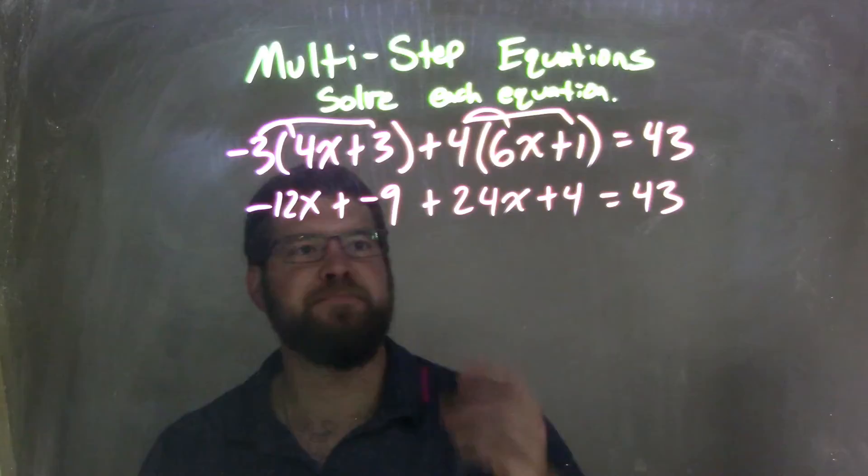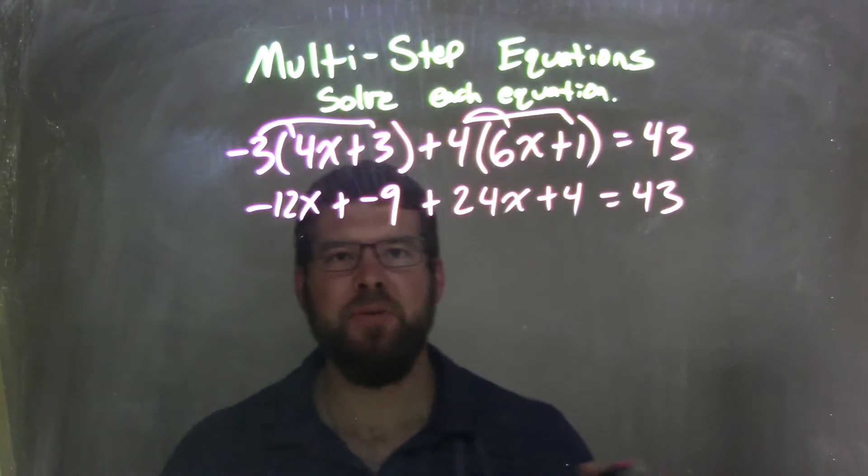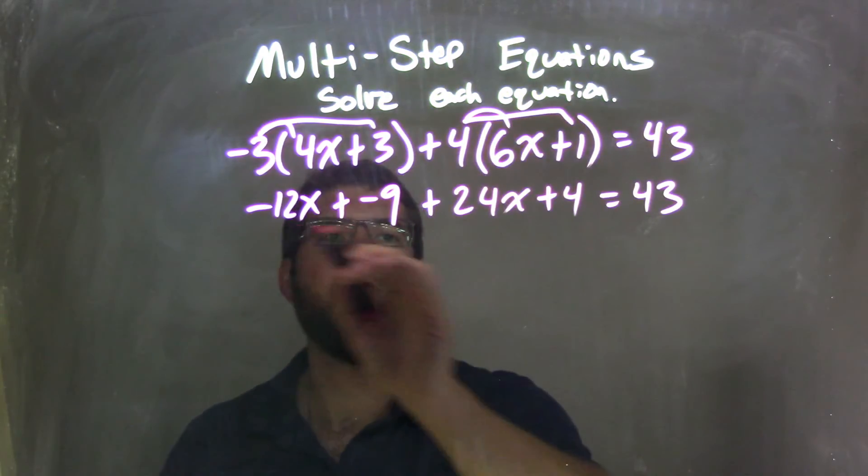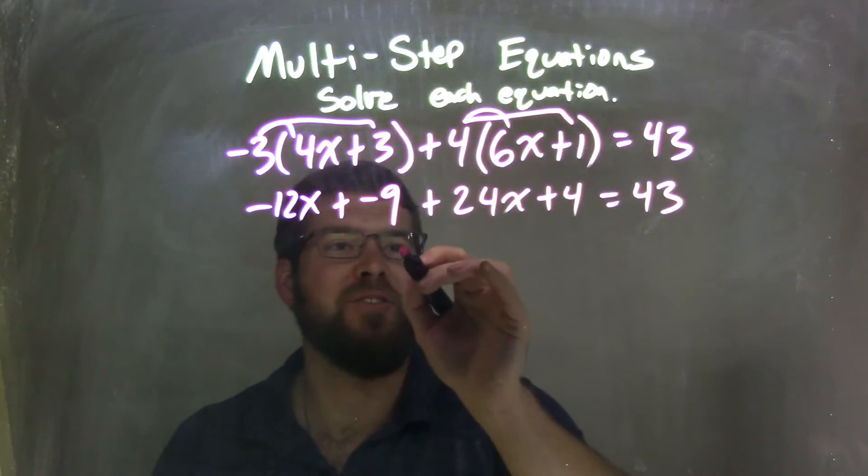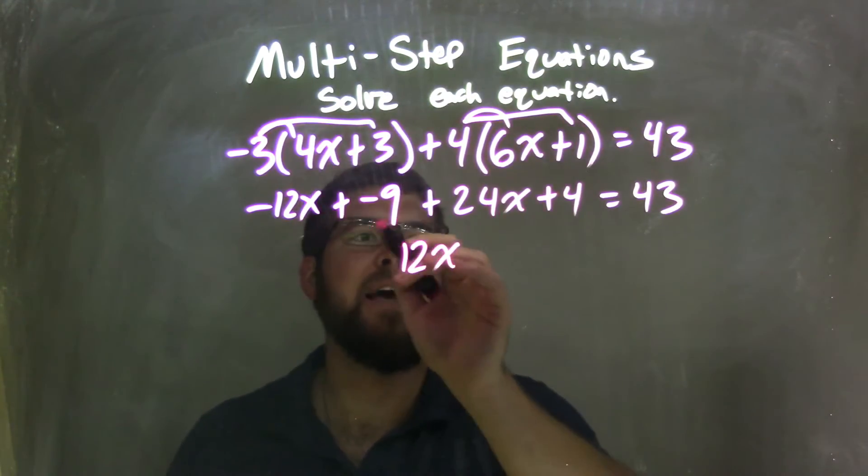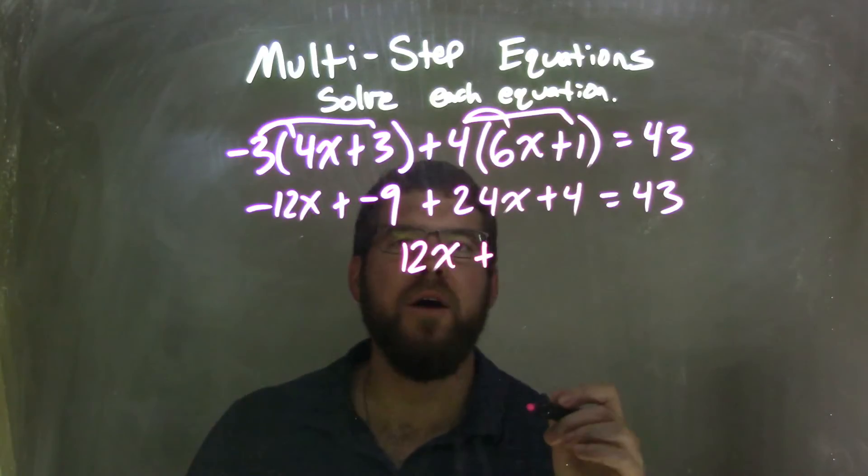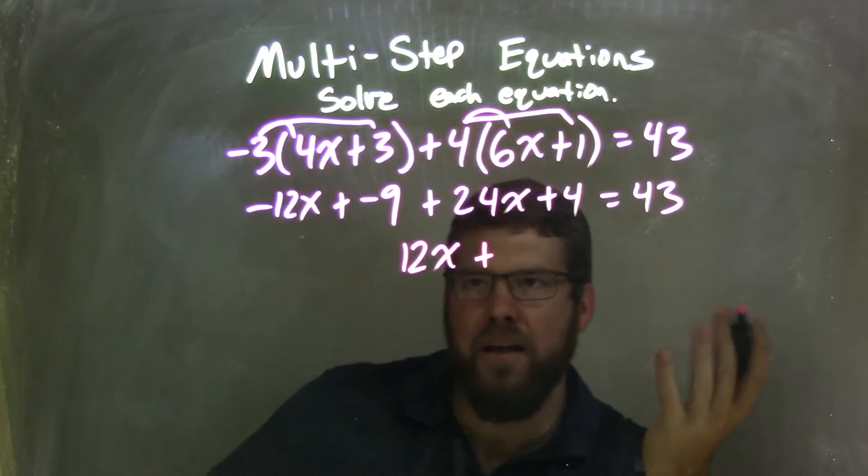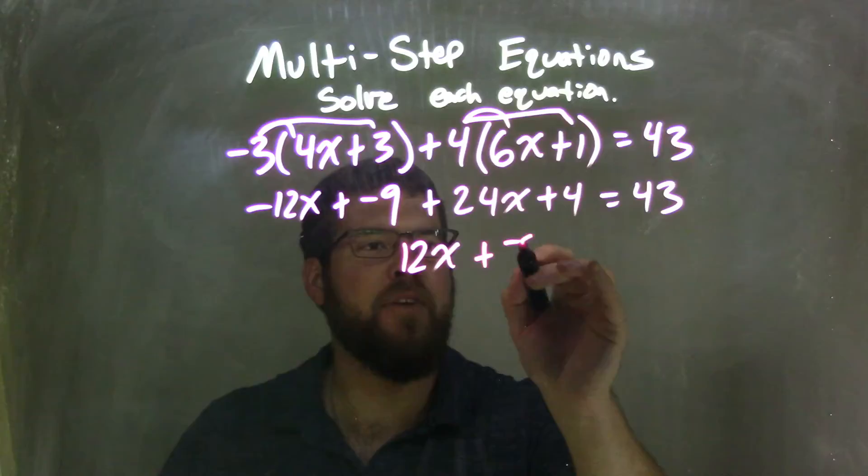Now I'm going to combine my like terms. If you need to rearrange it, you can. I'm not going to. Negative 12x plus 24x is just 12x. 24x minus 12x is 12x. Negative 9 plus 4, that's adding a negative, is negative 5.